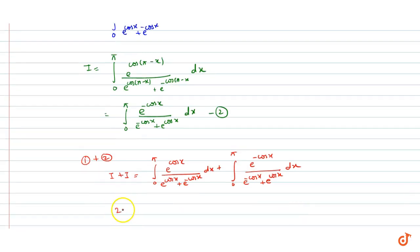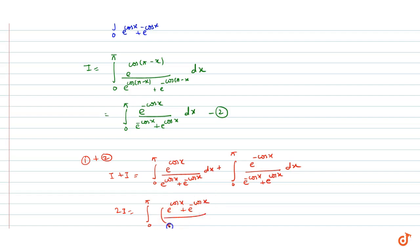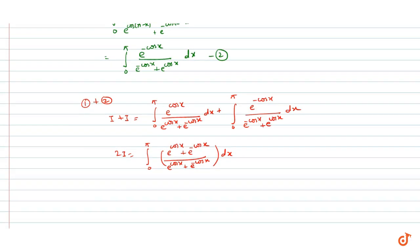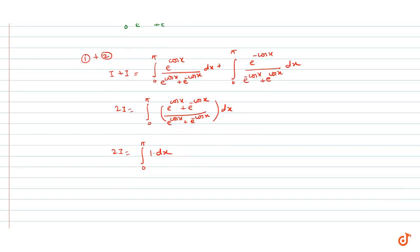Tho e ho jaega 2I is equal to integration from 0 to pi, e to the power cos x plus e to the power minus cos x, whole upon e to the power cos x plus e to the power minus cos x, dx. Tho 2I ho jaega integration from 0 to pi, 1 into dx.